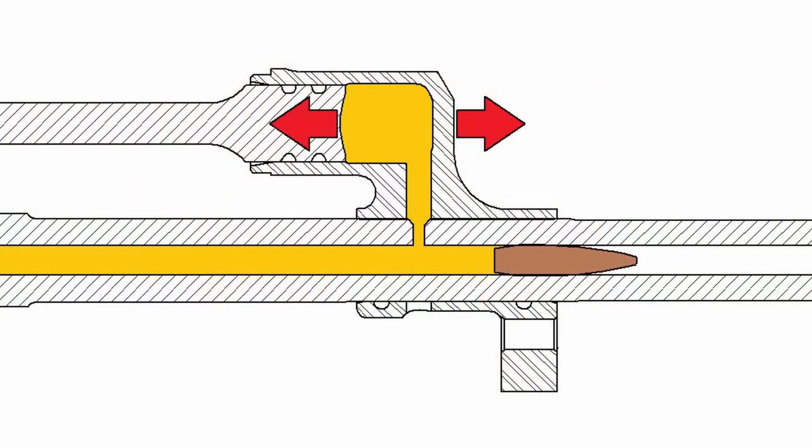In the Kalashnikov assault rifle, large volumes of gas enter the gas chamber, impacting the rifle's mechanics. These gases exert force in two opposite directions. On one side, they push against the bolt frame. The bolt frame, being quite inertial and heavy, varies in different systems, weighing between 400 to 500 grams — creating a significantly inertial system.